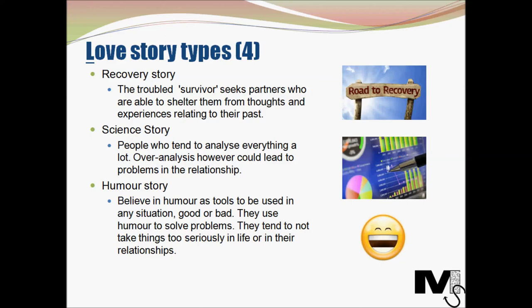The next story type is the science story. This story can be followed by people who tend to analyze everything a lot. They put themselves in various situations their partners may be experiencing, think about how they would react, and then guide their partners on what they could do. People following this story tend to think of themselves as very knowledgeable and capable of analyzing and predicting any situation. Over-analysis, however, could sometimes lead to a lot of problems and could actually get in the way of having a healthy relationship.